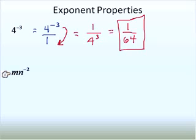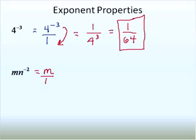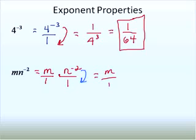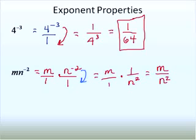On the next one, it's m times n to the negative 2. The n is being raised to the negative 2, not the whole expression. When we simplify to get a positive exponent, the m remains in the numerator of the fraction. The n to the negative 2 is the only thing that moves to the denominator. So we get m over 1 times 1 over n squared, and multiplying gives m over n squared as the final answer.